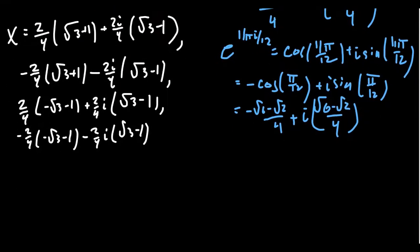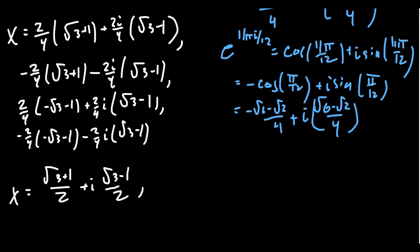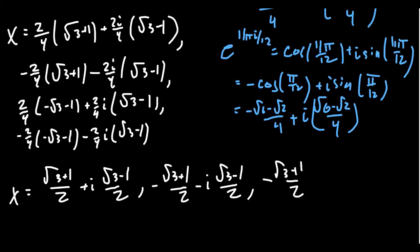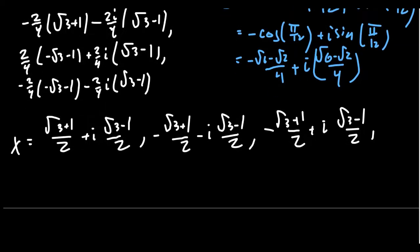Simplifying those expressions, the four solutions are: x equals root 3 plus 1 over 2 plus i times root 3 minus 1 over 2; negative root 3 plus 1 over 2 minus i times root 3 minus 1 over 2; negative root 3 plus 1 over 2 plus i times root 3 minus 1 over 2; and root 3 plus 1 over 2 minus i times root 3 minus 1 over 2.